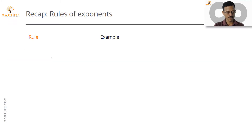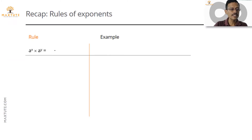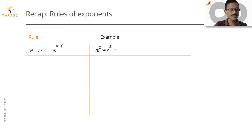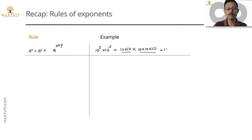The first rule: a^x into a^y is equal to a raised to the power of x plus y. For example, 10 square into 10 cube — 10² is 10×10, and 10³ is 10×10×10. Combined, we get five 10s multiplied, which is 10^5, or 10^(2+3). In general, a^x into a^y equals a^(x+y).